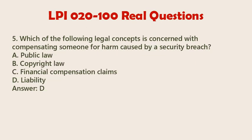Question 5. The correct answer is D: Liability. Liability in the context of a security breach refers to the legal responsibility or obligation of a party to compensate another party for harm caused by the breach. When a security breach occurs and results in harm to individuals or entities, the responsible party may be held liable for damages. This could involve compensating affected individuals for financial losses, damages to their reputation, or other forms of harm resulting from the breach.